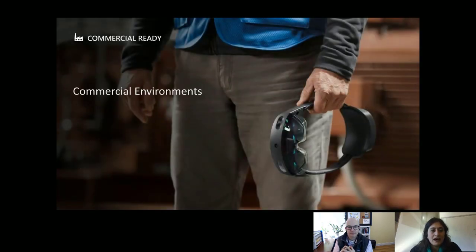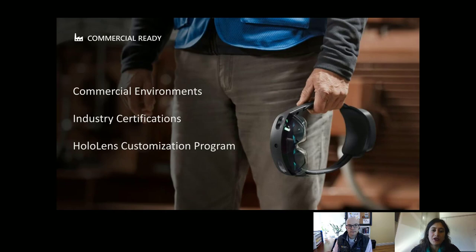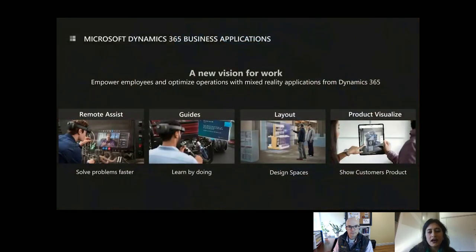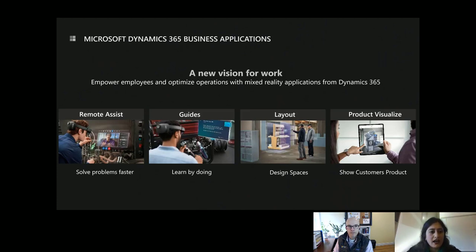HoloLens 2 is also commercial-ready, built for commercial environments including industry certifications and the HoloLens customization program. If you have a special helmet or requirements for certain environments that require modifying the HoloLens, there's a customization program launching with HoloLens 2 so that any industry can experience mixed reality. We also have an initial partnership with Trimble — a hardhat with HoloLens 2 already attached — and that partnership has been announced as well.